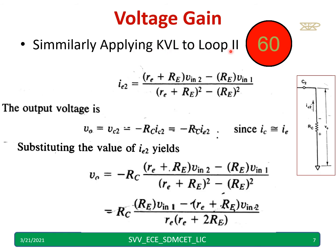Similarly, apply KVL to loop 2 and write down the equation for IE2 equal to. We will get RE plus RE into VIN2 minus RE into VIN1. But denominator will remain same - RE plus RE square minus RE square. Where we take the output voltage, we take across the RC. Hence, V0 equal to VC2. What is VC2? Minus RC into IC2. RC into IC2 is nothing but RC into IE2 because IC equal to IE. Simply, I will fill this IE2 value. I am rewriting and just rearranging these.